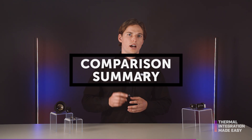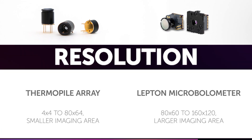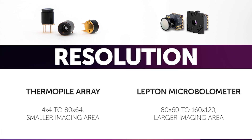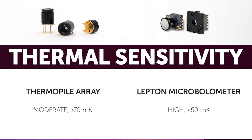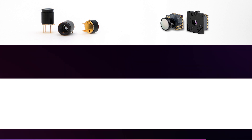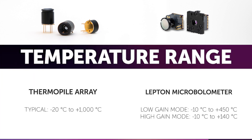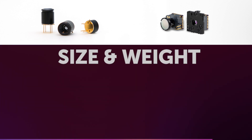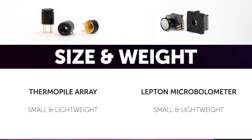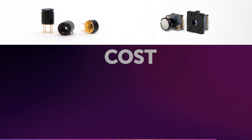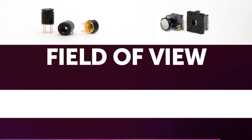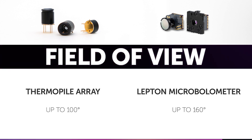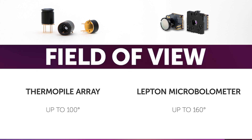Infrared camera modules offer higher spatial resolution, enabling them to capture more detailed thermal images with finer spatial features to easily distinguish different objects. While both sensors can sense a broad temperature range, thermopiles are not as sensitive to low-intensity infrared compared to infrared camera modules. In summary, thermopile arrays are suitable where moderate spatial resolution and cost-effectiveness are important, while infrared camera modules are preferred for higher resolution thermal imaging tasks where greater sensitivity and precision is a must.